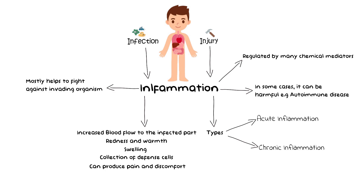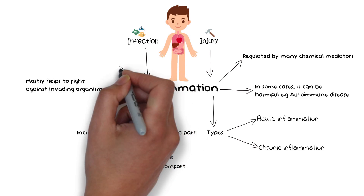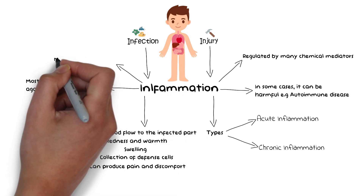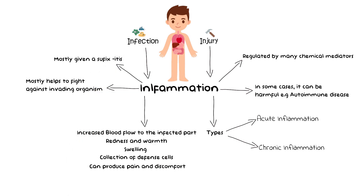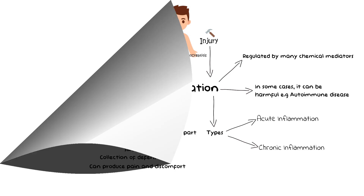This was a very concise description of inflammation. Any organ that is undergoing inflammation is most of the time given a name ending with '-itis'. For example, inflammation of the pancreas is known as pancreatitis, inflammation of the meninges of the brain is known as meningitis, inflammation of the gingiva is known as gingivitis, and inflammation of the pulp of a tooth is known as pulpitis.